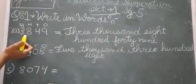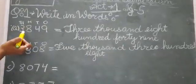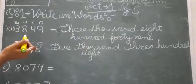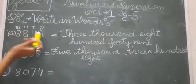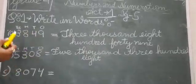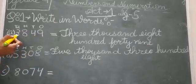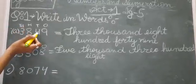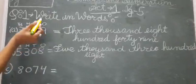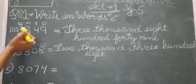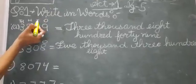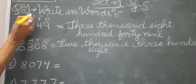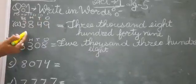How do you write this number in its number name, in words? Ones means one, tens means ten, hundreds means hundred, thousands means thousand. So I am going to write this number, 3849, in words.